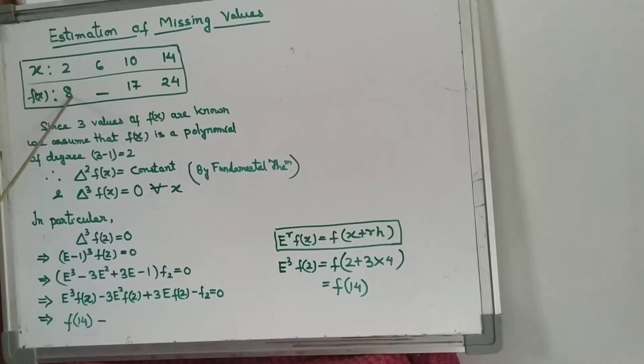Look here: 1, 2, 3. So three values of f(x) are given here, so we assume that f(x) is a polynomial of degree 3 minus 1. We increase it by 1, which is 2, so f(x) is a polynomial of degree 2.